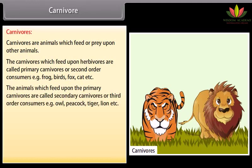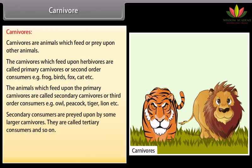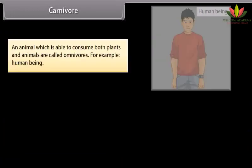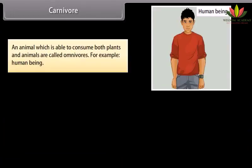The animals which feed upon the primary carnivores are called secondary carnivores or third-order consumers. For example, owl, peacock, tiger, lion, etc. Secondary consumers are preyed upon by some larger carnivores called tertiary consumers. Larger carnivores such as lion, tiger, etc., which cannot be preyed upon further, occupy the top position in the food chain and are called top carnivores. An animal which is able to consume both plants and animals is called an omnivore, for example, human beings.